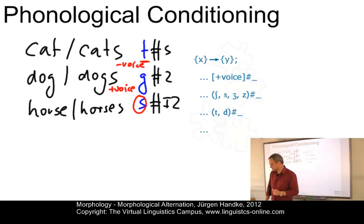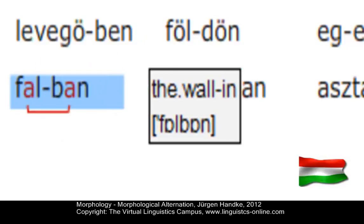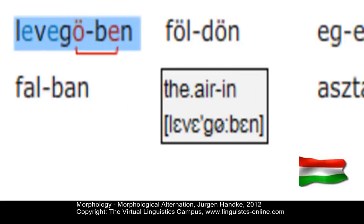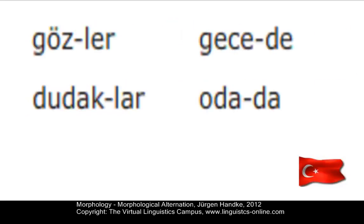Let's look at some other languages. In Hungarian, the morpheme that denotes the locative relationship 'in', like 'in the book', has two allomorphs: 'ben' and 'ban'. For example, 'levegőben' (in the air) versus 'falban' (in the wall). The occurrence of these two allomorphs is clearly phonologically conditioned: 'ben' occurs if the final stem vowel is a front vowel; 'ban' has to be chosen if the final stem vowel is a back vowel.